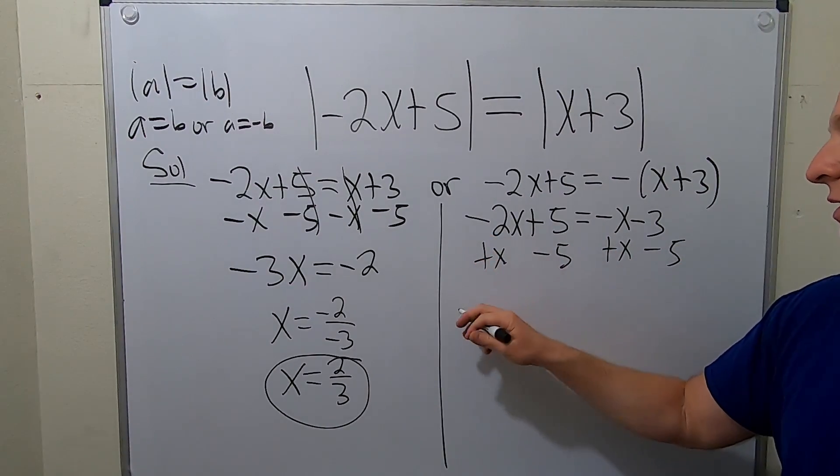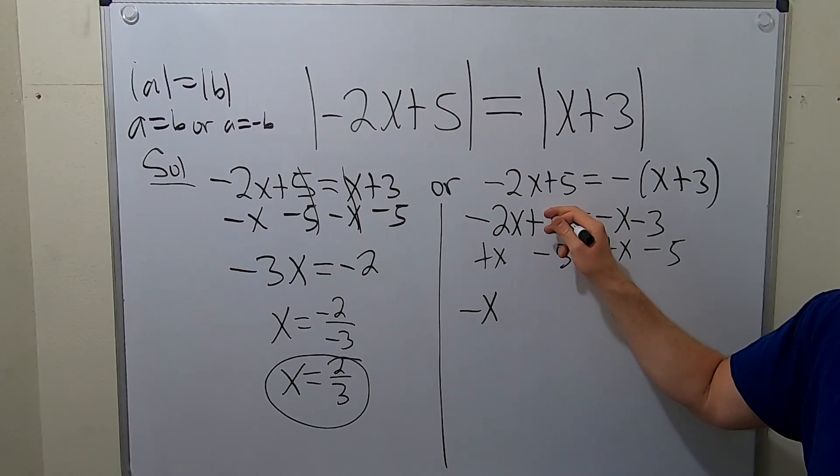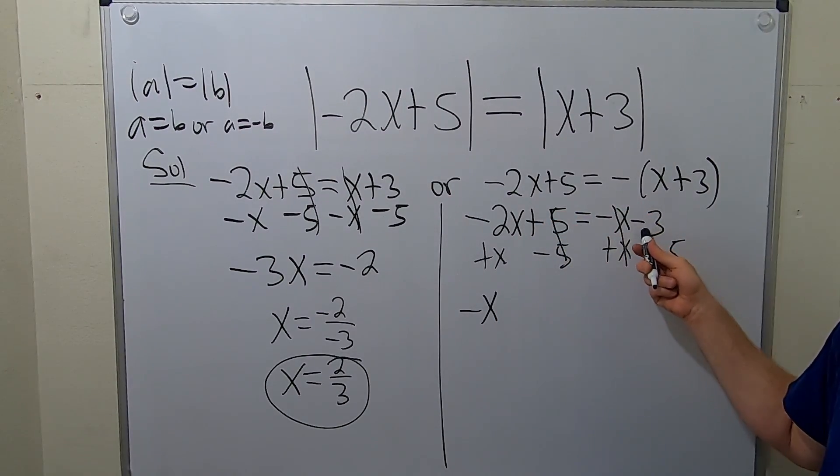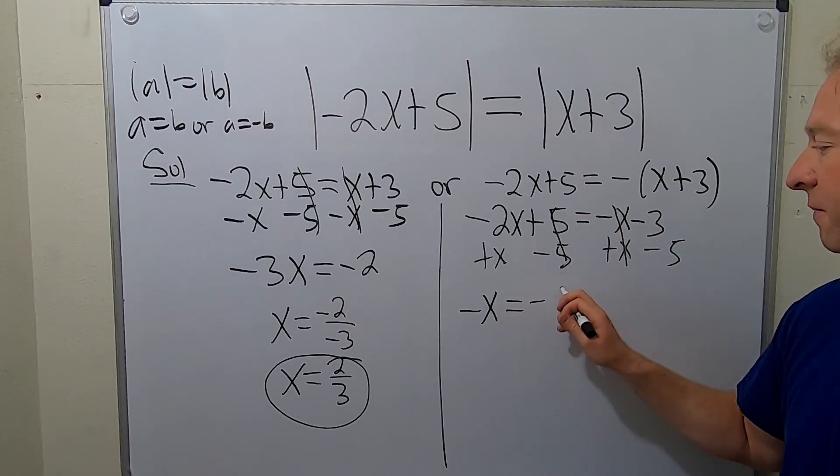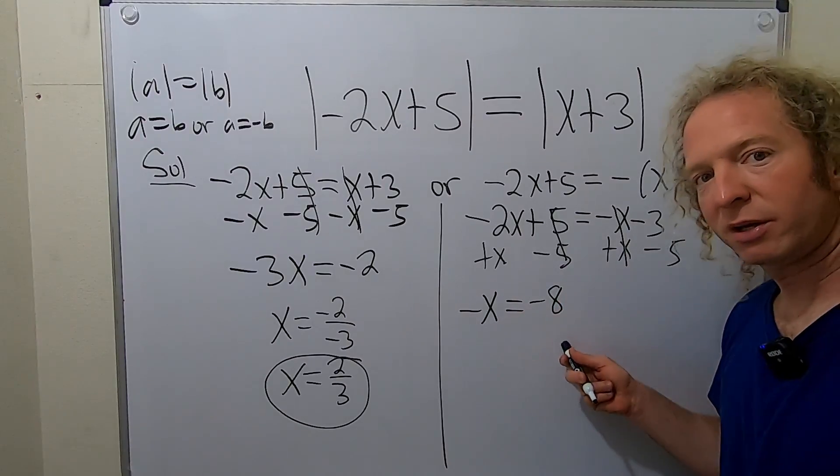That gives us negative x. These cancel. Negative 3 minus 5 is negative 8. Divide by negative 1 and you get 8.